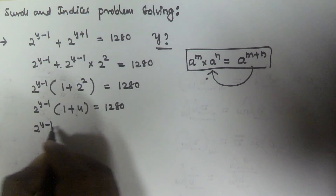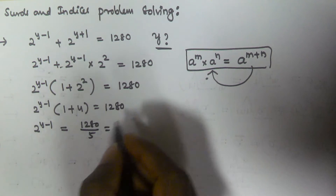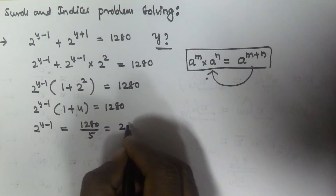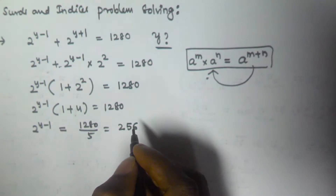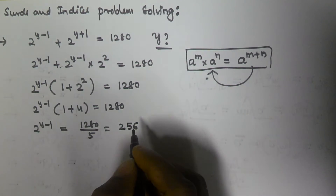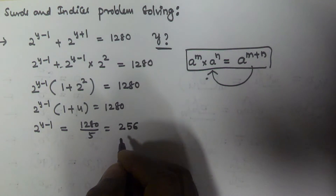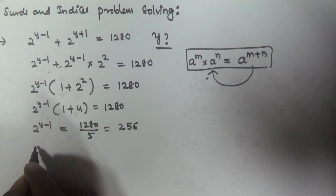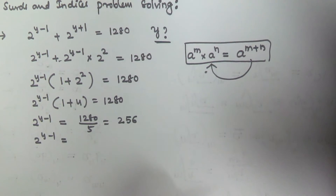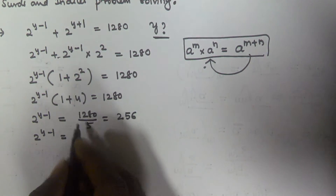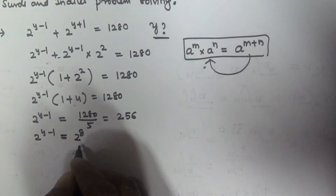So 2^(y-1) times (1 + 4) equals 1280, meaning 2^(y-1) times 5 equals 1280. Therefore 2^(y-1) equals 1280 divided by 5, which gives us 256.